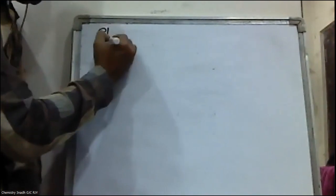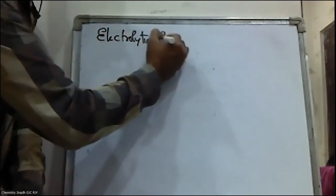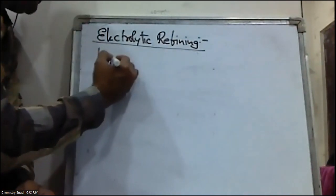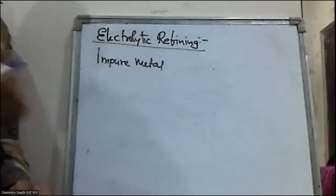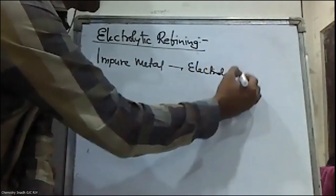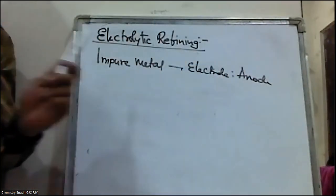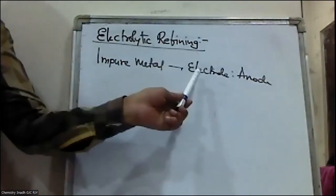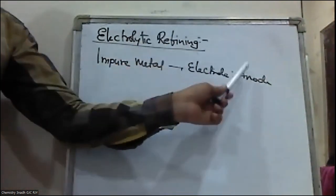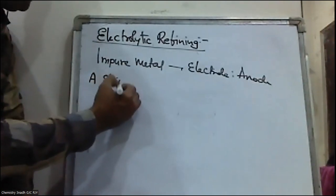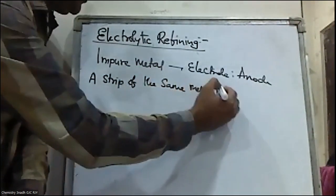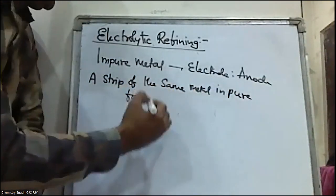In electrolytic refining, the impure metal which is needed to be purified is made into an electrode, and this electrode acts as the anode. The impure metal is converted into a metal rod, and it acts as an anode. A strip of the same metal in pure form is used as the cathode.